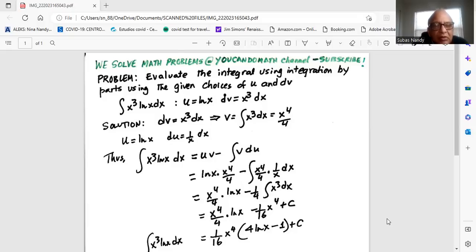Hence, integration of x cubed ln x dx by using the integration by parts rule is equal to uv minus integration of v du. So, uv means ln x times x to the 4 divided by 4 minus integration of x to the 4 divided by 4 multiplied by 1 over x dx.